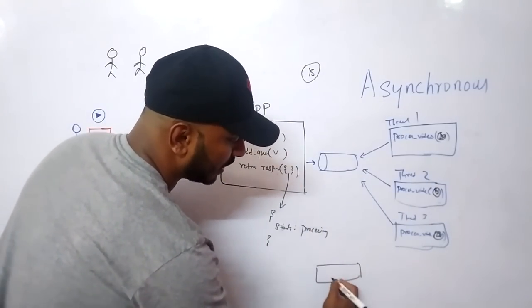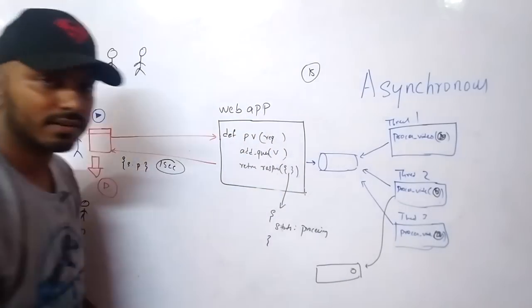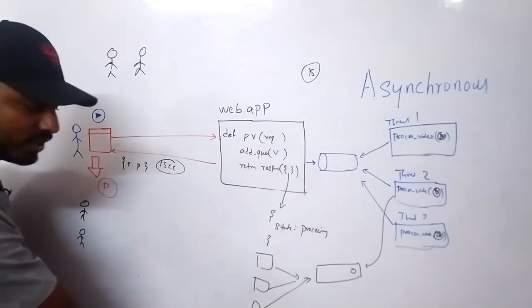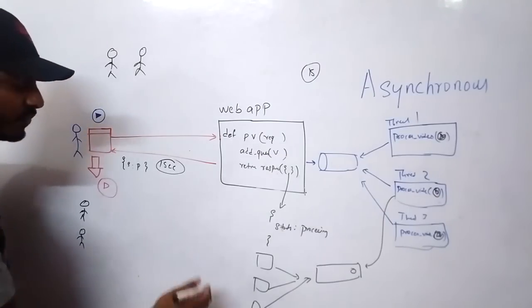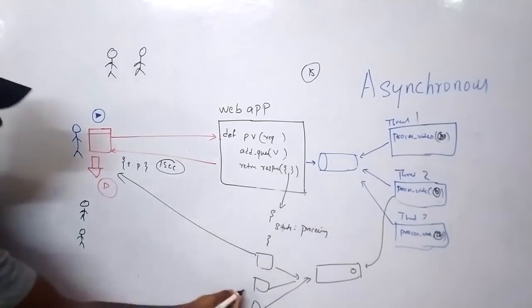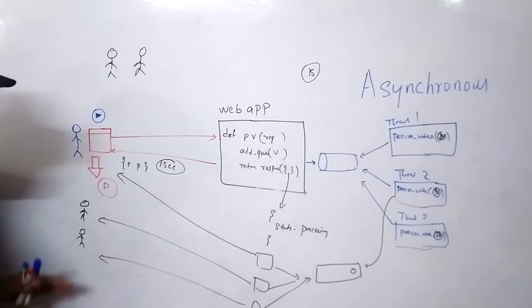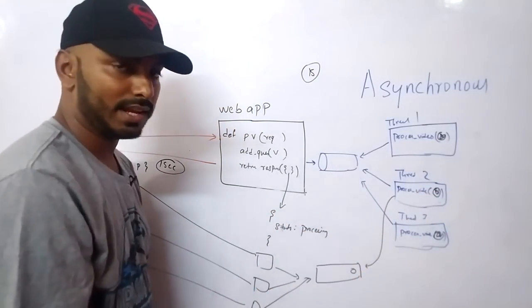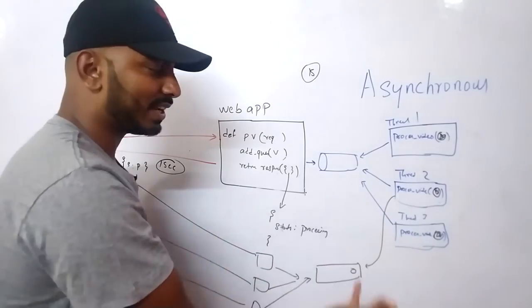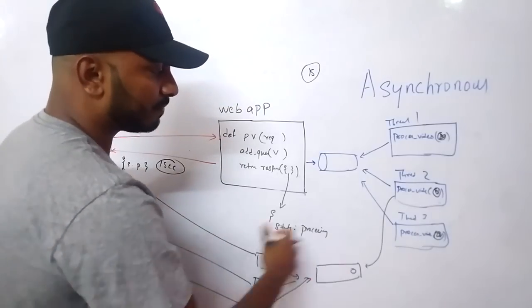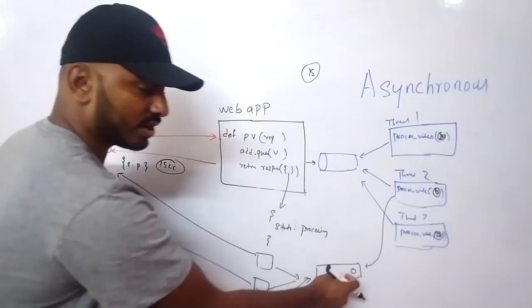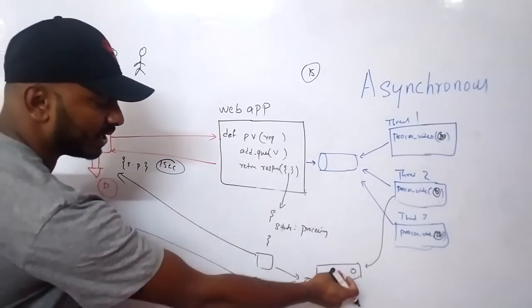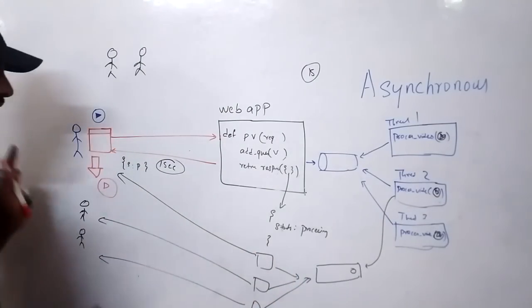We can add another queue for notifications. Once a worker finishes processing, it puts a 'finished' message into this second queue. A separate set of notification threads monitors this queue. Their job is to send an SMS or email with the processed video attached to the user. They would have captured the user's email ID in the original request. Once they finish sending the notification, they put a message confirming the job is done. So everything is working asynchronously end to end.